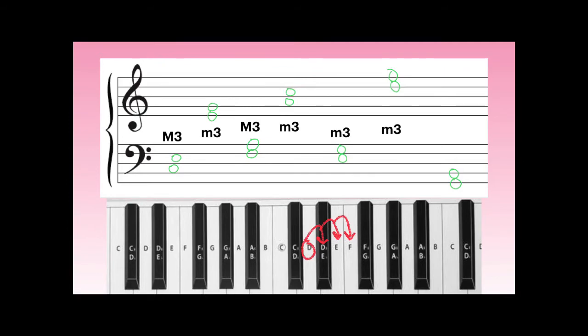And finally, we start on a G and go up one, two, three, four half-steps to a B. Because that's four half-steps, it's a major third.